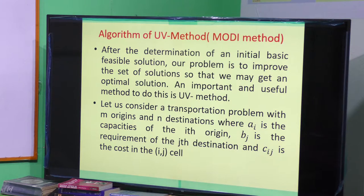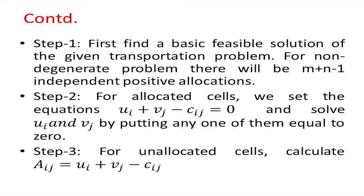Now let us consider a transportation problem with m origins and n destinations, where a_i is the capacity of the i-th origin, b_j is the requirement of the j-th destination, and c_ij is the cost in the ij cell. Step one: first we have to find a basic feasible solution of the given transportation problem by any method — say Northwest Corner Rule, Least Cost Method, or Vogel's Approximation Method.